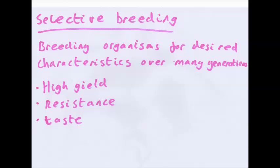Another way of getting the traits you want is selective breeding — humans breeding organisms for desired characteristics over many generations. For example, if you have a field of cows and half of them have really big muscles and lots of fat, you would deliberately breed those big cows with each other to get more big cows, and do that over many generations until you get a massive, high-yield cow at the end.